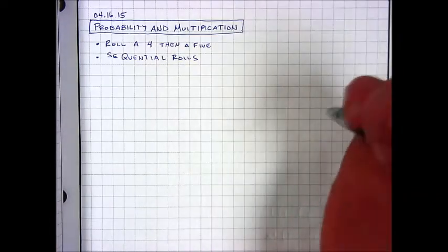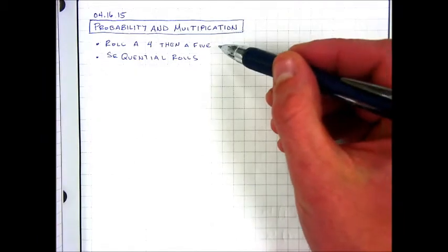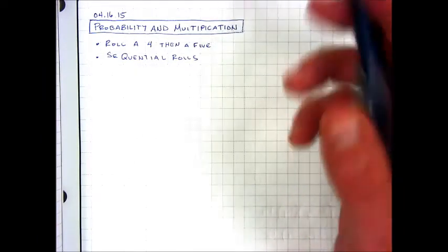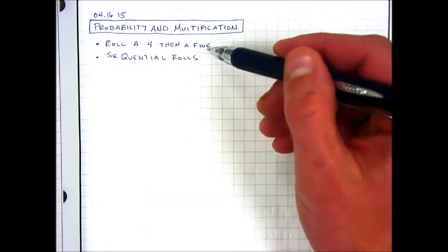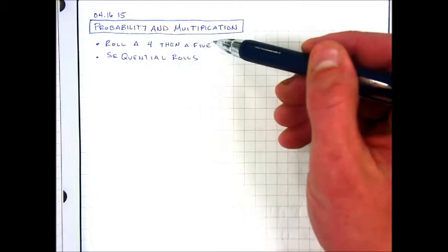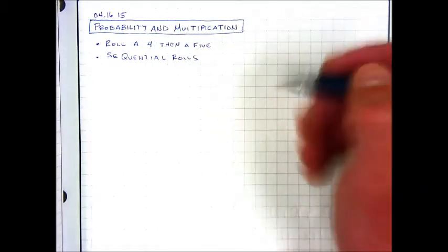Our next probability example is rolling dice. We have one die, and we're going to calculate the probability of rolling a 4 and then rolling a 5 in sequential rolls, one roll right after the other.